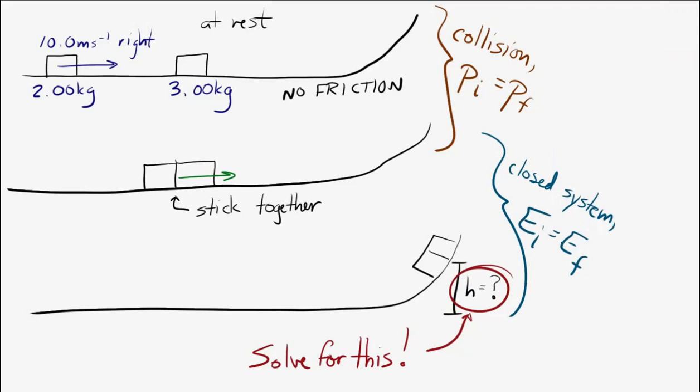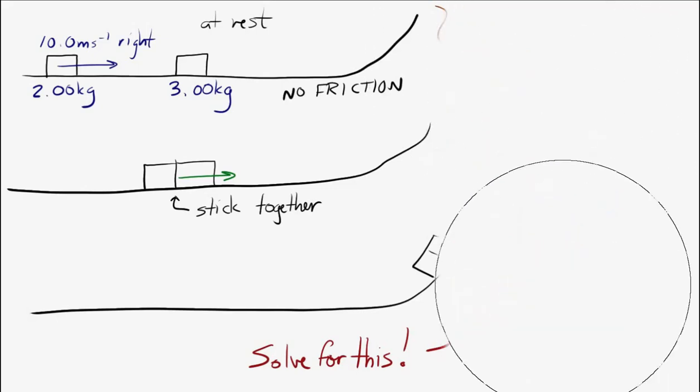So let's try it out. Let's use momentum conservation to go from the first to the second. So the total momentum in the first picture, well, that's just the momentum of the moving block. The stationary block has no momentum.